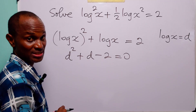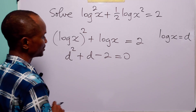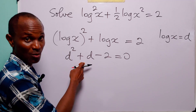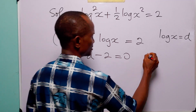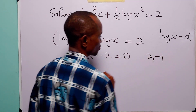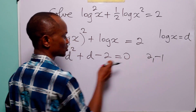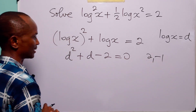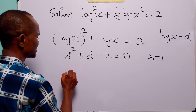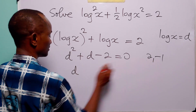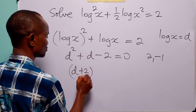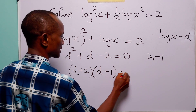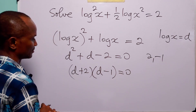Now we can factorize this quadratic equation. All we have to do is find the factors of minus 2 that add up to plus 1, and that is going to be 2 and minus 1, because 2 times minus 1 is minus 2 and 2 minus 1 is 1. We can factorize this equation as (d + 2)(d − 1) = 0.